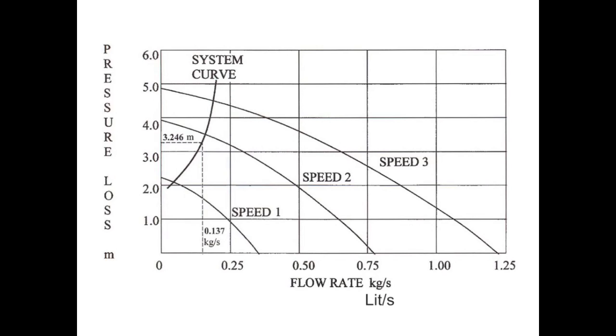Here we have a performance characteristics chart of a fixed rate pump with three different speeds. The vertical axis here is given as a function of pressure loss in meters, and the horizontal axis is given as a function of flow rates in kilograms per second.